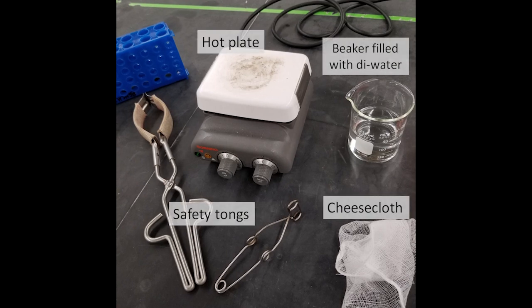To set up your bench for the Nelson-Somogyi method, fill a 250ml beaker halfway with deionized water and obtain a square of single-ply cheesecloth. You should also have a hot plate at your bench space and a few safety tongs available for you to use.